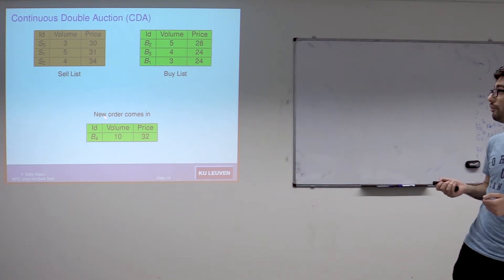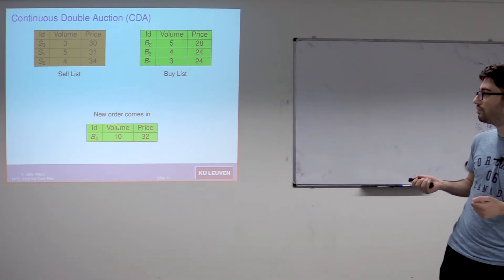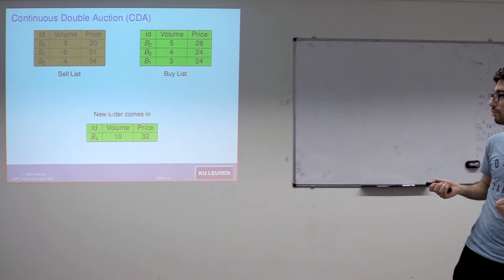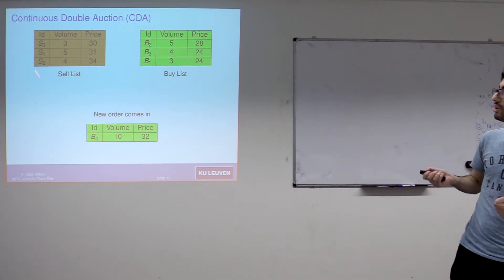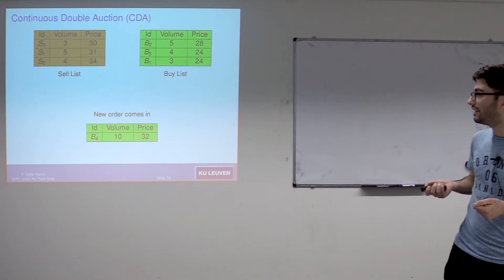When a new order comes in, we need to do two things. We need to first check if this new order can be matched. For instance, here we have a buy order, so we need to check if this order can be matched with orders from the sell list. After that, we need to put what remains from this order on the buy list. We need to do some comparisons, comparing the prices and comparing the volumes. Then we need to insert this order in this list while keeping it sorted.